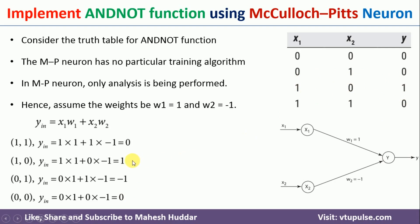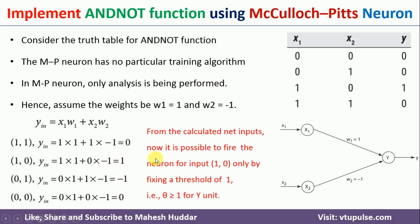Now looking at these net inputs, I expect the neuron to fire only in the (1,0) case. So I can set theta equal to 1. With theta=1, the condition y_in ≥ theta is satisfied only for input (1,0) where the net input is 1. In all other cases: 0 < 1, -1 < 1, and 0 < 1, so the neuron will not fire. It fires only in the (1,0) case. Hence the minimum value of theta should be 1, and it can be anything above 1 as well.